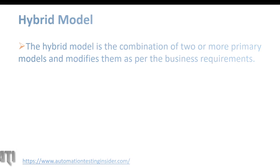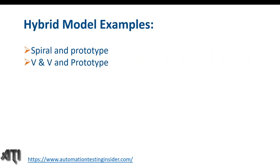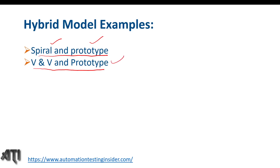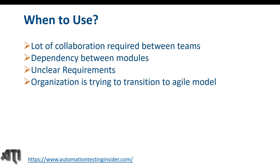Let's talk about what are the examples of hybrid model. When we combine spiral model with prototype, then we can call it a hybrid model. Another example could be V&V model with prototype model. Now, when we go for hybrid model — when a lot of collaborations or interactions are required between teams, then we should go for hybrid model.